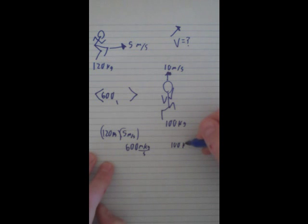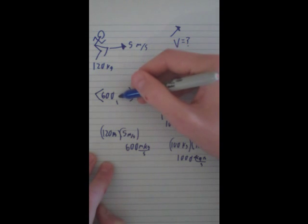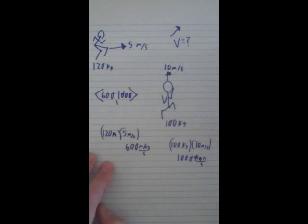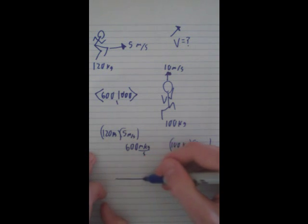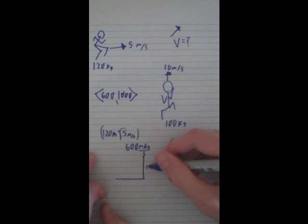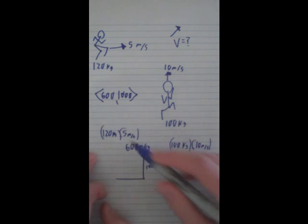Now, in our y direction is this guy's. So, 100 kg times 10 meters per second, which equals 1000 kg m/s. So, in our y direction, it's 1000. So, all we have to do here is just a simple triangle. So, since this is 1000, like we can see here in our y direction, and this is 600, it's just an a squared plus b squared equals c squared.